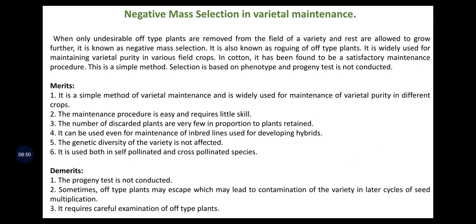The second is negative mass selection. In negative mass selection, the off-types are removed and the rest of the plants are bulked and forwarded to further generation. Merits: it is a simple method widely used for maintaining certain crop species, the maintenance procedure is easy and requires little skill, fewer plants are discarded compared to positive mass selection, it can be used for maintenance of inbred lines for developing hybrids, and it is used in both self- and cross-pollinated species. Demerits: progeny test is not carried out, phenotypic selection again, and requires careful examination of off-type plants as confusing effects may lead to roguing out good plants.